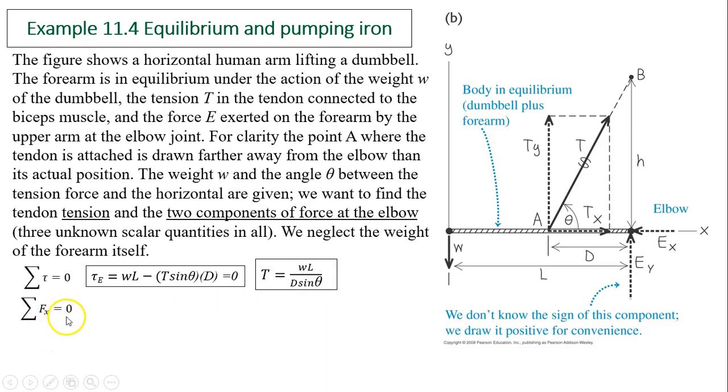The second condition is force. Force in the x direction has to be zero, so Tx equals Ex. Tx equals T cos θ, and T equals WL divided by D sin θ. This quantity times cos θ gives WL divided by D times cotangent θ. The direction of Ex is pointing to the left, opposite of Tx.